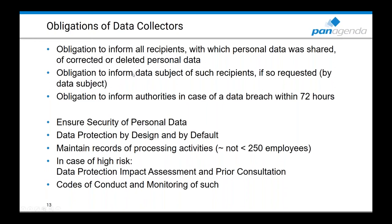You also have the obligation to inform the data subject about those recipients if they request it. So if someone exercises their right of information, you must tell them with which recipients you've shared their data — whether Mailchimp, a business partner, or anyone else. This means you have to know, for every process where you touch, collect, store, or process personal data, when that might lead to sharing data — so you can remain in control of it. Larger organizations must also maintain records of processing activities: for every process that touches personal data, you're obliged to maintain a record of where it is collected, stored, and processed.